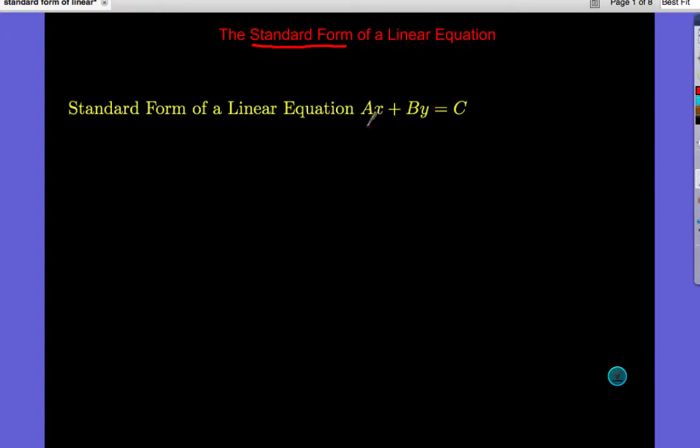Standard Form looks like this: Ax plus By equals C. There are some restrictions we have, or some things we have to note. Mainly that A, B, and C are real numbers. So they're elements of the real number system. That's number one.